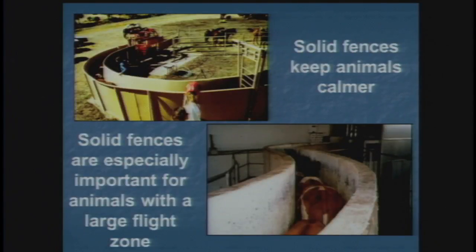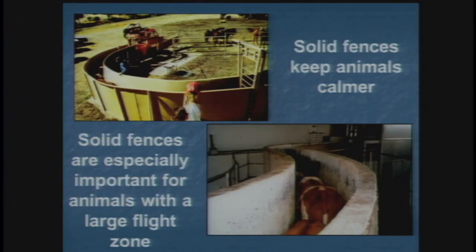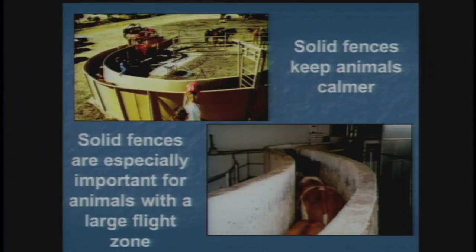How about curved chutes? There's been some controversy about that. I've been designing all of my systems curved. There are some basic principles in how animals move — cattle always want to go back to where they came from. If I lay out a curved chute, they tend to feel like they're going back to where they came from. Also, as the animal is coming in from the crowd pen, he doesn't see the people standing around the squeeze chute. Animals tend not to want to approach people standing around the squeeze chute, so one advantage of the curved chute is they don't see you standing there as they start to enter.